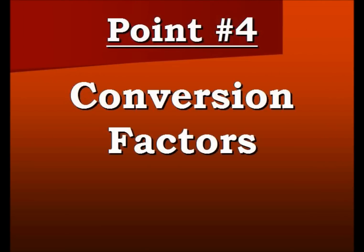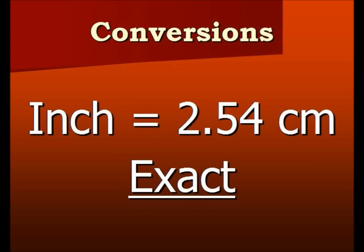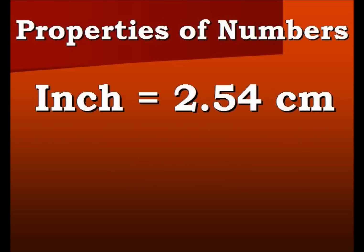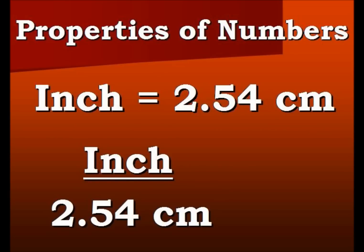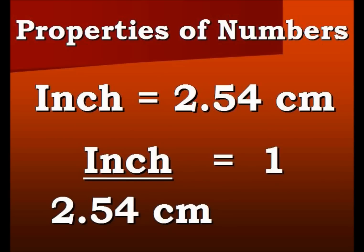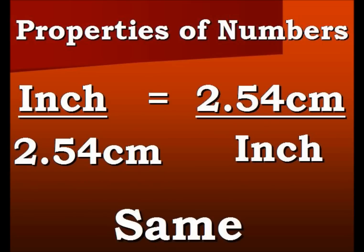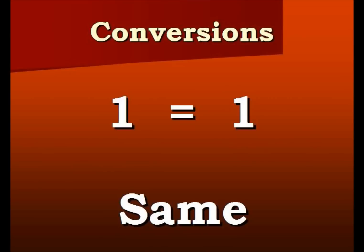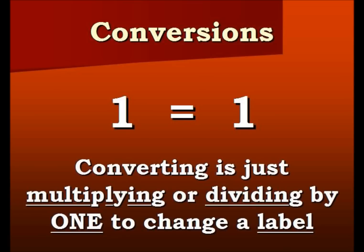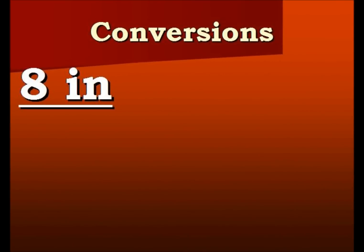Here's our fourth point — our conversion factor: 1 inch equals 2.54 centimeters, exact. We can divide those and get 1 because they're the same value since they're equal to each other. So 1 inch divided by 2.54 centimeters is equal to 2.54 centimeters divided by 1 inch — they're both equal to 1. The main point of converting is understanding you're multiplying or dividing by 1 to change a label. Back to our board: we have 8 inches times 1 divided by 1.